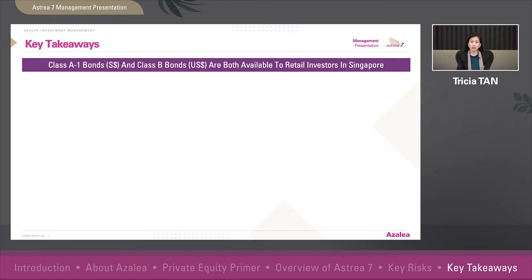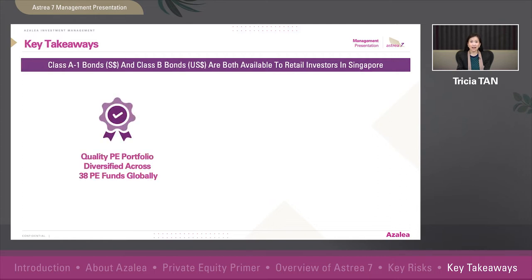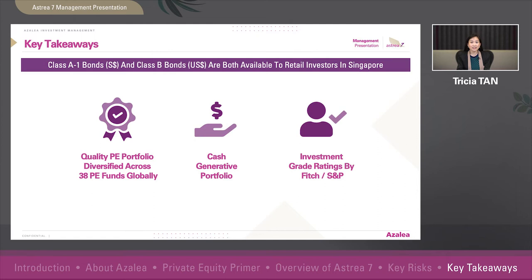Class A1 bonds are issued in Singapore dollars while Class B bonds are issued in US dollars. The bonds are backed by cash flows from a quality portfolio of investments in 38 PE funds diversified globally. The portfolio is cash generative and we have also built in structural safeguards. All our bonds are also expected to be given an investment grade rating.